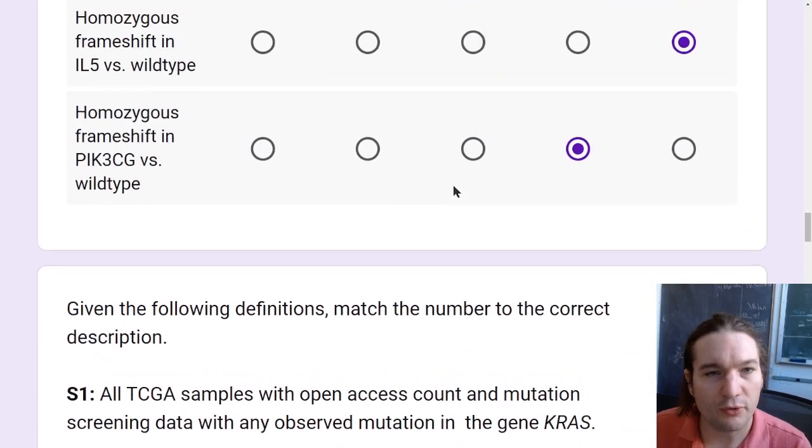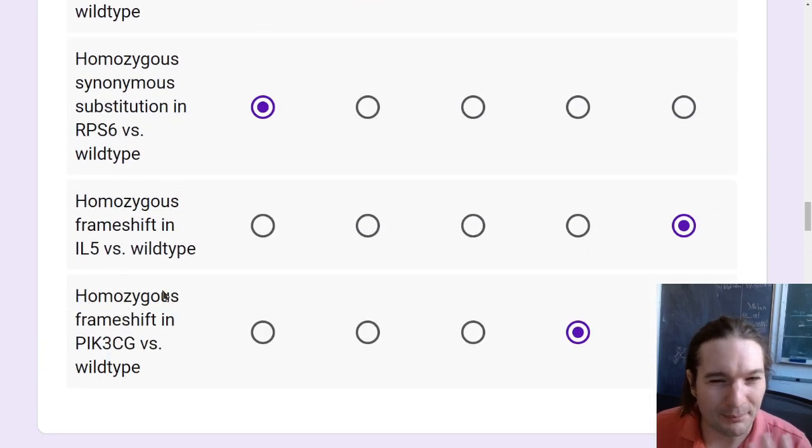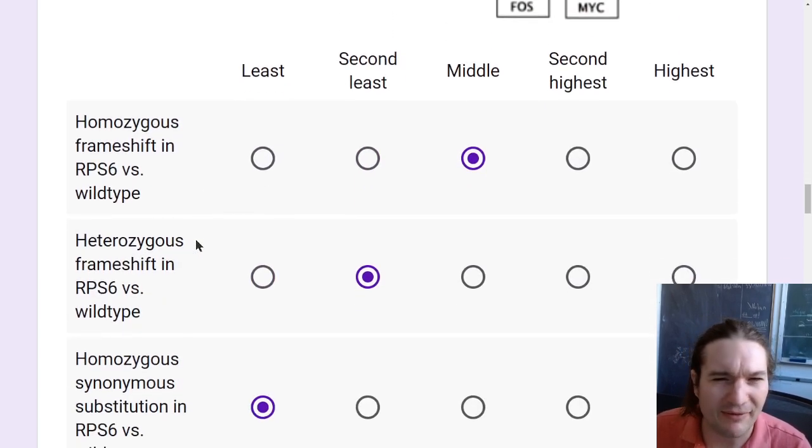Now just for the record, note I did say homozygous frameshift mutations for the rest of these, so that way you were kind of comparing apples to apples-ish, apples to pears, maybe? I don't know. That was the point. So hopefully that makes sense. Just clarify for me if not.